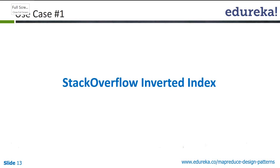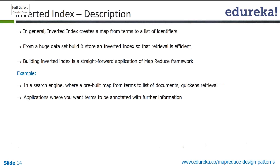This is the Stack Overflow Inverted Index. In general, an inverted index is a data structure — a map from terms to a list of identifiers where those terms are actually present. These are really useful when you have a huge dataset and you want to do retrieval. In that case, an inverted index is just a necessity; you cannot do without it.